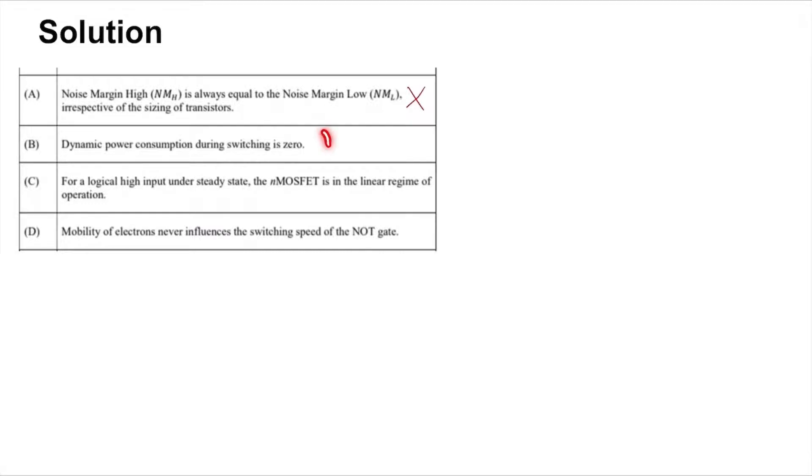Next, dynamic power consumption during switching is zero. Now dynamic power consumption, even for a NOT gate that is not connected to any load, will have the internal parasitic capacitances of the PMOS and NMOS drains. This is the drain of the PMOS and this is the drain of the NMOS, connected to VDD and ground.